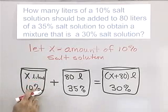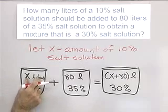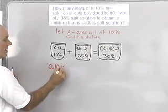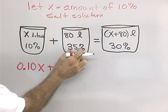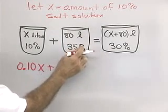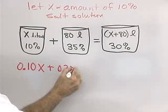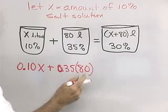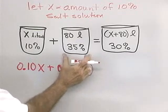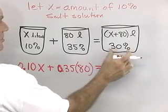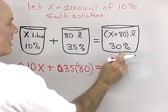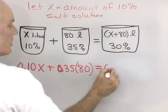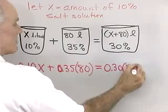I have X liters that's 10% salt, so the amount of salt is 0.10X. Here I have 80 liters, 35% of which is salt, so the amount of salt is 0.35 times 80. That has to equal the amount of salt on the right side: 30% of X plus 80 liters, which is 0.30 times (X plus 80).